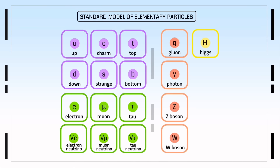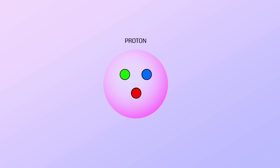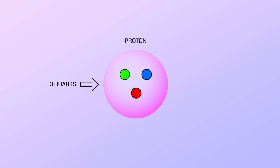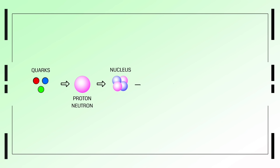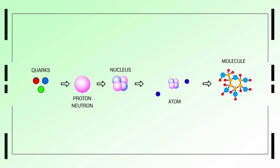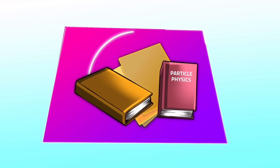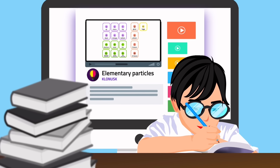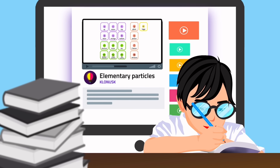So what classifies something as an elementary particle? If we look at the proton, it consists of 3 quarks. However, it's more precise to say quarks collectively form a proton rather than a proton contains 3 quarks. So protons are not elementary particles — they are subatomic particles. Elementary particles don't have any substructures and cannot be broken down into smaller components, which means they aren't made up of anything. These are the final and smallest known building blocks of our universe.